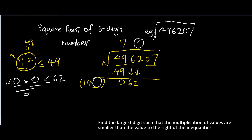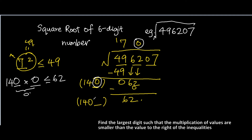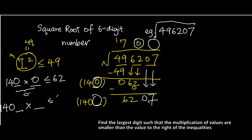The next step is pretty much the same. Now instead of 7, we have 2 digits — 70. So we multiply 70 times 2, which gives us the first 3 digits: 140, and a particular digit to fill in. This whole number times this digit must be smaller than or equal to 6207, and both digits must be the same. So we have 1400-something times something, which is smaller than or equal to 6207.